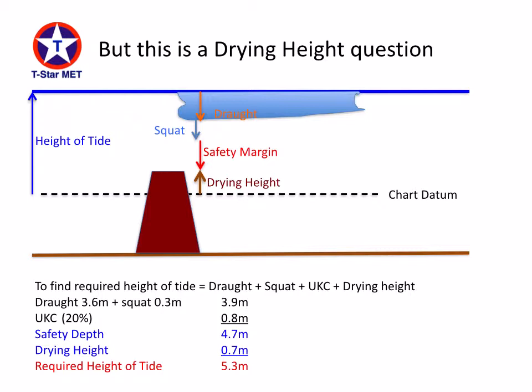To find the required height of tide: draft plus squat plus underkeel clearance plus drying height. The draft was 3.6 metres, the squat is 0.3 metres — together that gives us 3.9 metres. Rounding up to 4 metres and applying an underkeel clearance of 20%, the UKC allowance is 0.8 of a metre. Adding it to the initial 3.9 gives a safety depth of 4.7 metres. The drying height is 0.7 metres, so adding the two together I require a height of tide of 5.3 metres to achieve that safety margin.